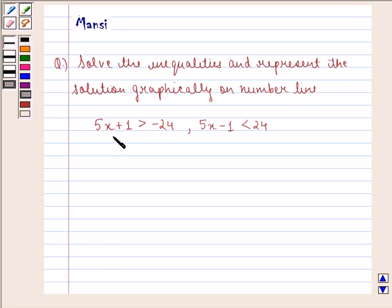5x + 1 is strictly greater than -24, and 5x - 1 is strictly less than 24.